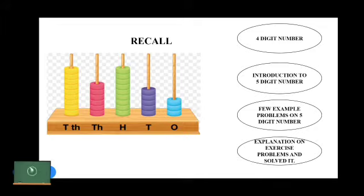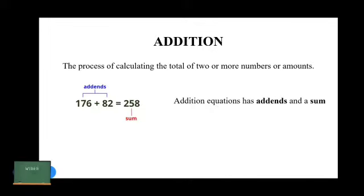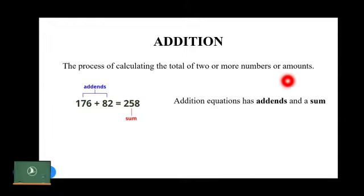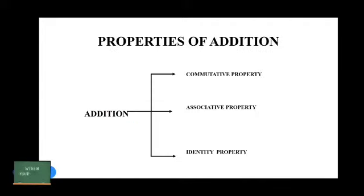Now we will learn about the fundamental operations that are performed in maths. The fundamental operations are addition, subtraction, multiplication, and division. In this chapter, you will be learning about addition. Addition is the process of calculating the total of 2 or more numbers or amounts. The numbers given to add are called addends, and the total we get is called the sum. There are 3 properties of addition.